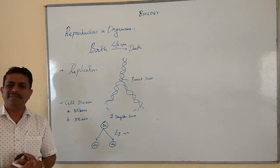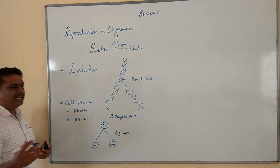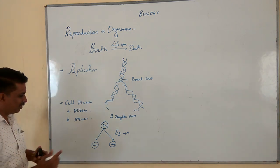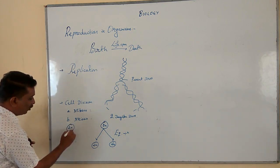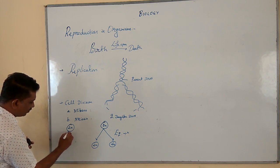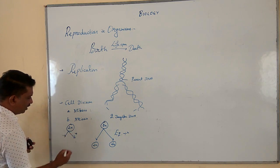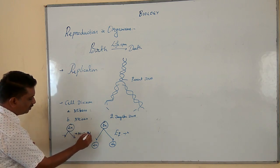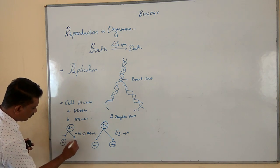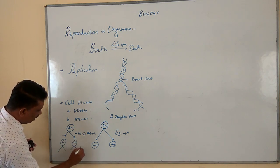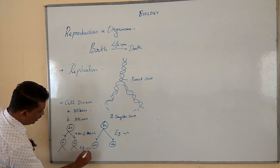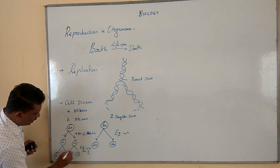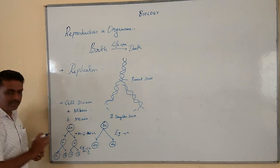The second type of cell division is called meiosis. It naturally occurs in reproductive or germinal cells. With the exhibition of reductional division, the original chromosome number is reduced to half. Meiosis is divided into meiosis I and meiosis II. Meiosis I is purely a reductional division, while meiosis II is said to be equational division. As a result, during the course of meiosis II, it leads to the formation of four haploid daughter cells.